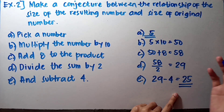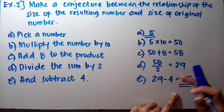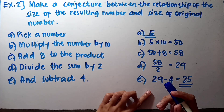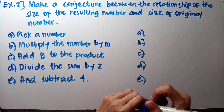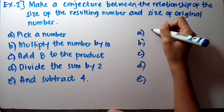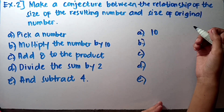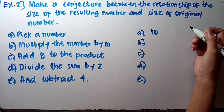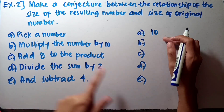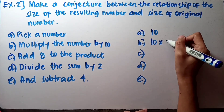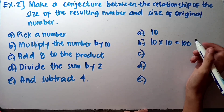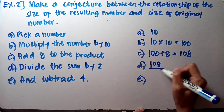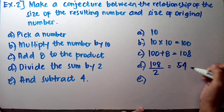The resulting number is 5 times the original, but let's try another number to verify. Suppose we pick number 10. Multiply by 10: 10 times 10 is 100. Add 8: 100 plus 8 is 108. Divide by 2: 108 divided by 2 is 54. Subtract 4: 54 minus 4 is 50.